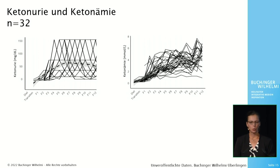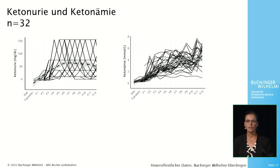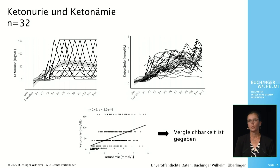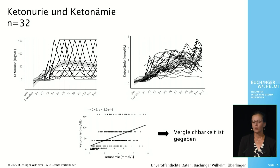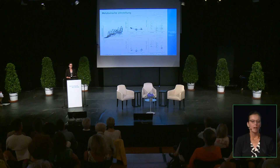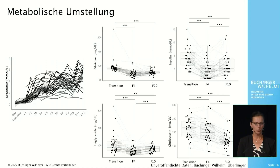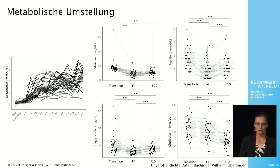We used the two measurement methods within the scope of a clinical trial. 16 men and 16 women between the age of 20 and 70 years fasted for 12 days. The left graph shows the increase in ketonuria and the right graph shows the increase in ketonemia. We performed a correlation analysis and demonstrated a significant medium-strong positive linear correlation, meaning a certain comparability between the two measurement methods is given. We were able to demonstrate the metabolic switch to fasting metabolism: parallel to the increase of ketone bodies in the blood, we found a decrease of glucose levels to the lower norm range and a decrease of insulin levels.